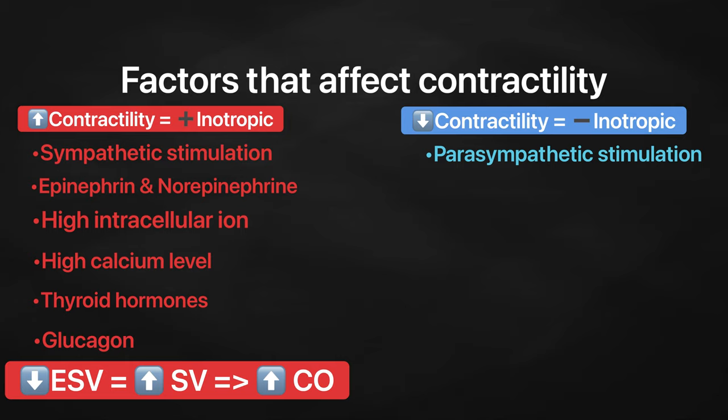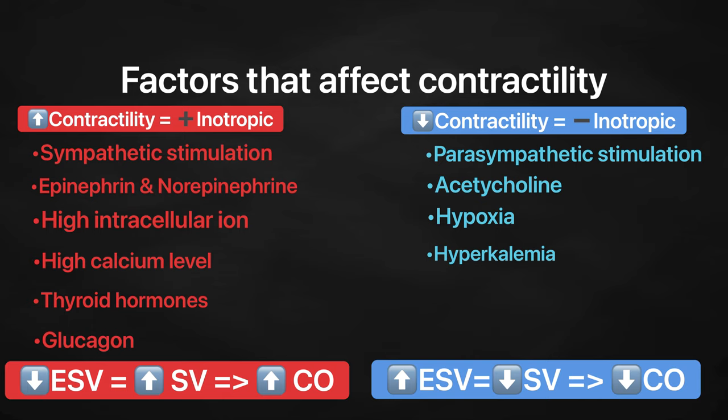On the other hand, increase in end-systolic volume may be due to one of these or more of these factors: parasympathetic stimulation, acetylcholine, hypoxia, and hyperkalemia. An increase in end-systolic volume is an indication that the ventricle pumps out less blood, meaning there is a decrease in stroke volume and also there is low cardiac output.